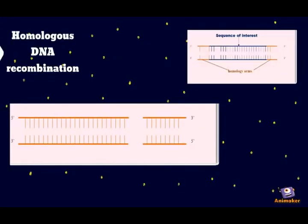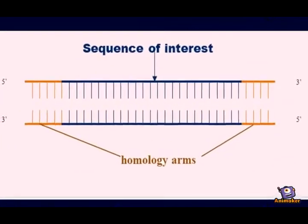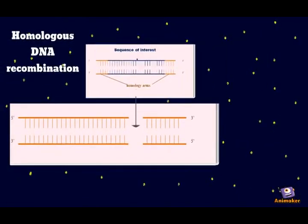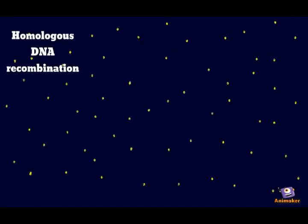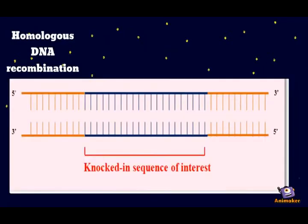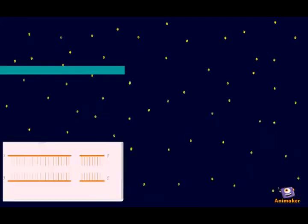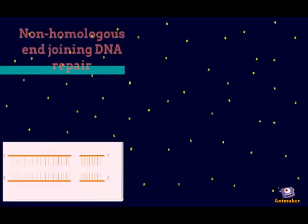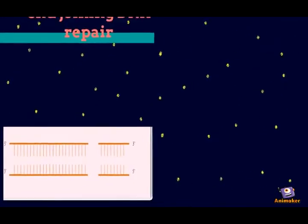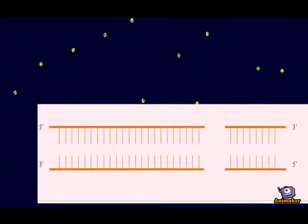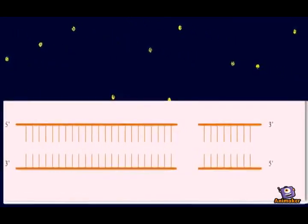The gap formed can be repaired via homologous DNA recombination — that means inserting a modified template with homologous arms. The recombination intermediates can then be resolved to complete the DNA repair process. Alternatively, the gap can be repaired by non-homologous end joining, through inserting or deleting a small piece of DNA, thus producing a precise genome edit.